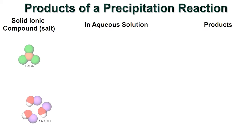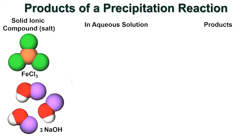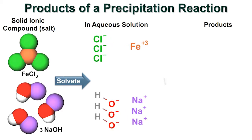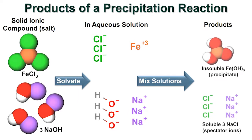This example shows the progression of a precipitation reaction. Soluble ionic solids, iron-3-chloride and sodium hydroxide, are dissolved in water to form aqueous solutions. The solutions are mixed, and the precipitate iron-3-hydroxide is formed. The aqueous solution remaining is a mixture of sodium ions and chloride ions in water.